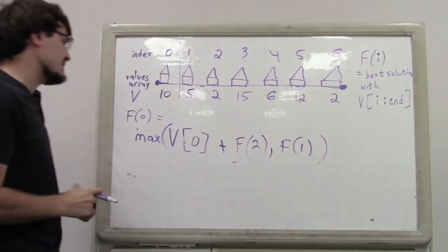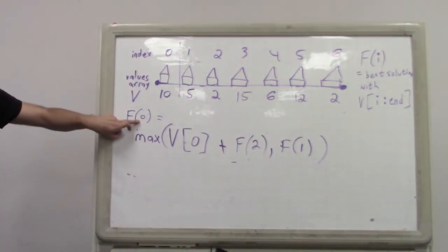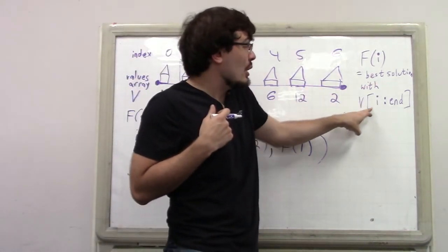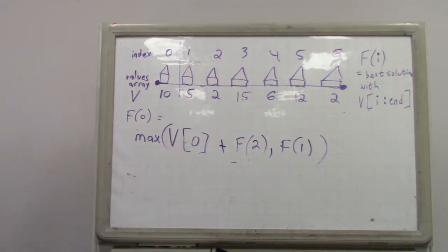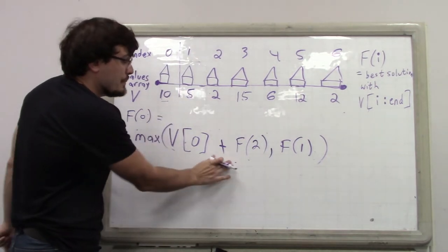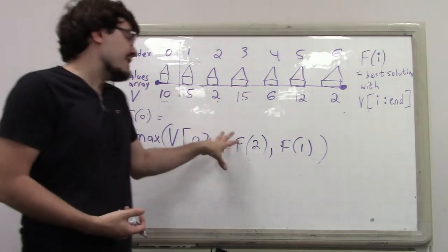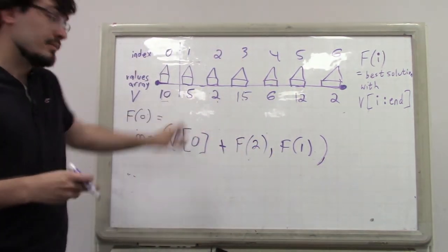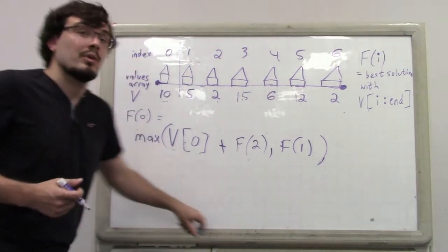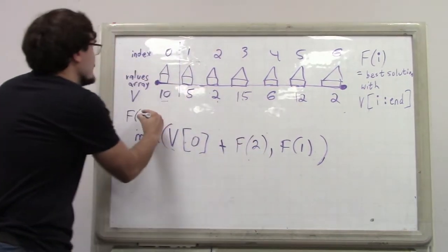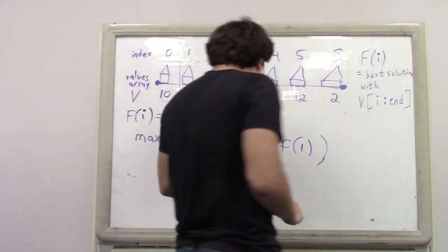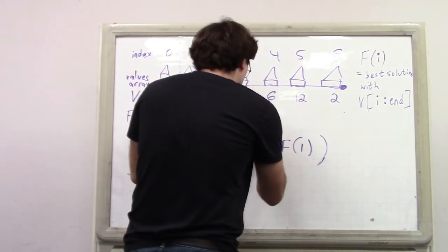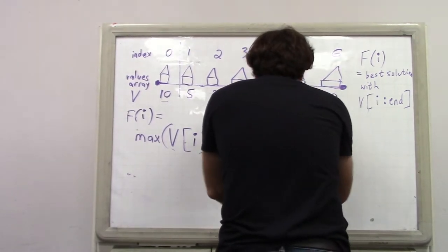This is the general case of the recursion — derived by example for the first index, but we can generalize it. The solution to F(0), which is the best solution over all of V, is the maximum of V[0] plus F(2), and F(1). We can generalize this: F(i) equals the maximum of V[i] plus F(i+2), or F(i+1). If you're at some index i and want the best solution from i to the end, you can either take V[i] and skip forward two, or skip the current one and get the optimal solution one down.